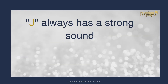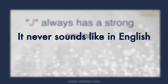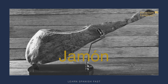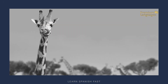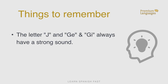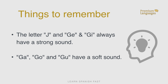J always has a strong sound attached to it, so it's easy to remember — whenever you see a J, connect it to a strong sound. Examples: JAMÓN (ham) and JIRAFA. To summarize: the letter J and the combinations GE and GI always have a strong sound, while GA, GO, and GU are soft.